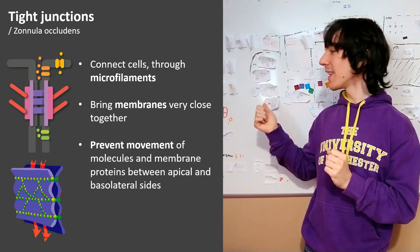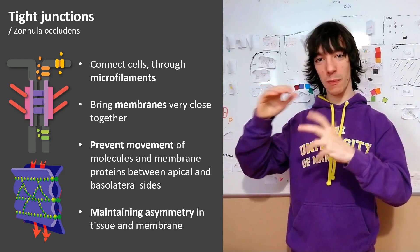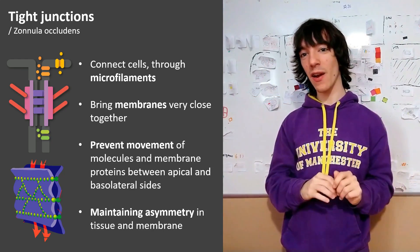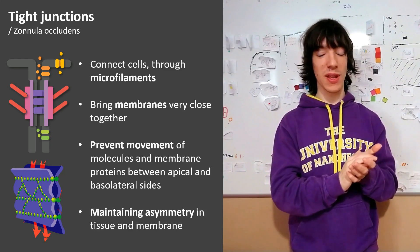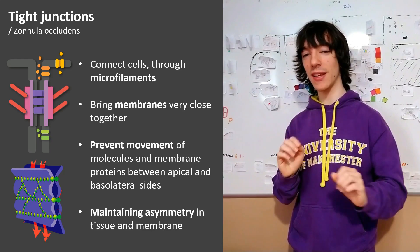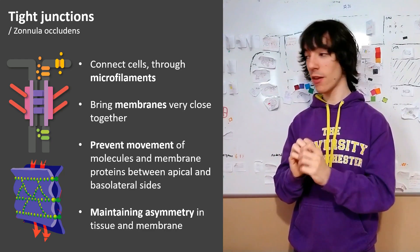That allows them to maintain asymmetry in a tissue between sides of a cell layer or between sides of the plasma membrane of the cell. They don't create the asymmetry, but when the asymmetry has been created, they ensure that it lasts.